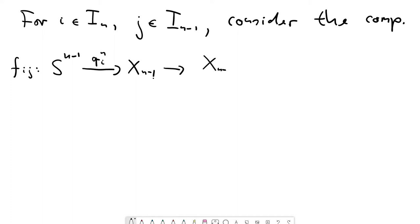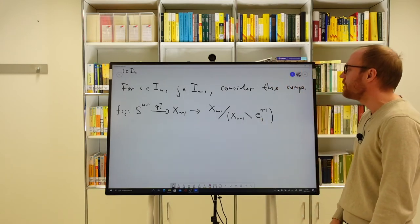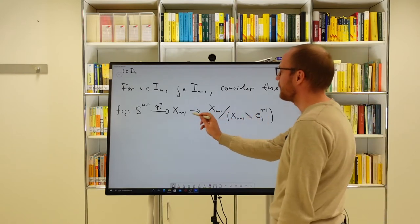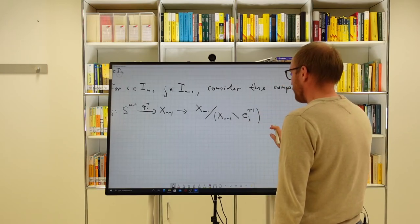Now we take the n minus one skeleton and mod out a subspace of it. What is this subspace? It's the complement of the open cell corresponding to our index j. So we take X^{n-1} and remove the open n minus one cell e_j, collapsing everything but this open cell. This arrow is just the canonical projection into the quotient space.